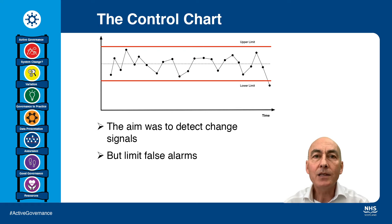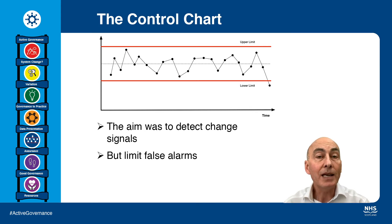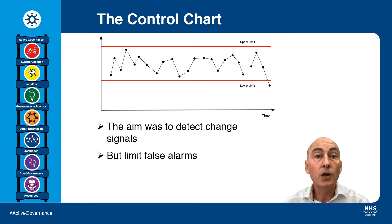Shewhart was very concerned to avoid what he called false alarms, where people would go and find something, but actually it was just down to noise in the system, or what we call common cause variation.